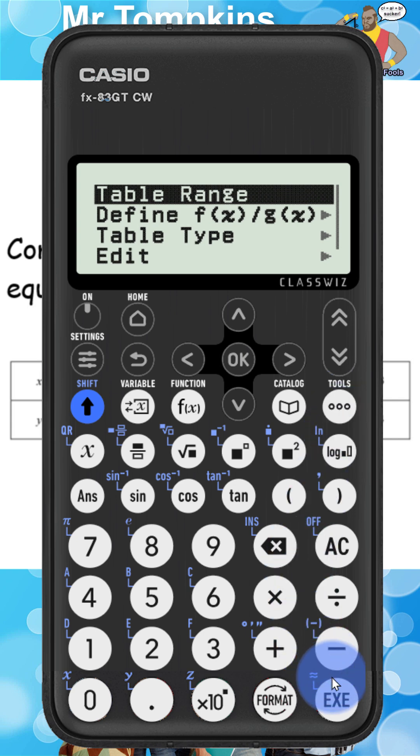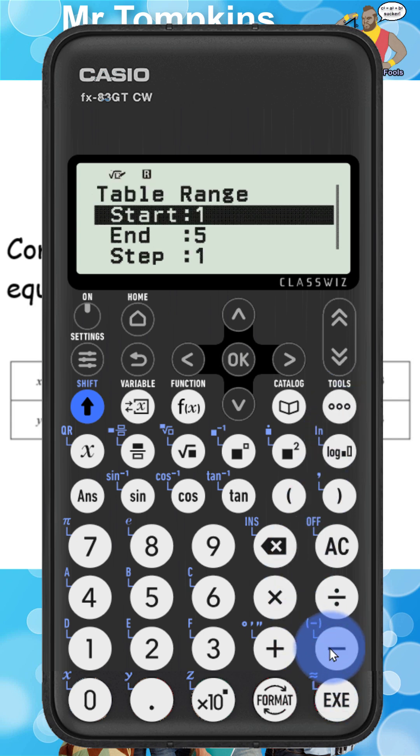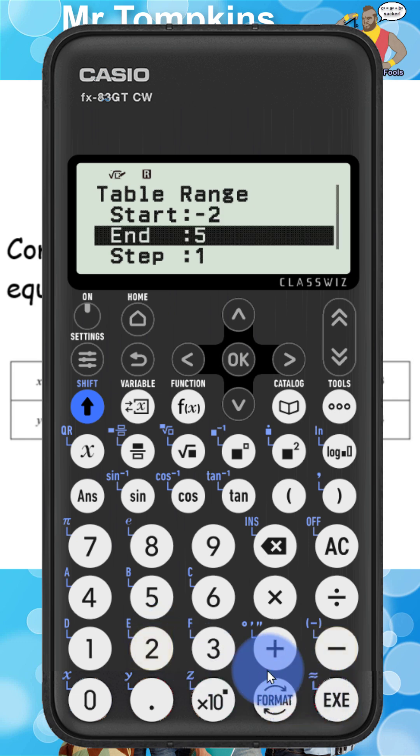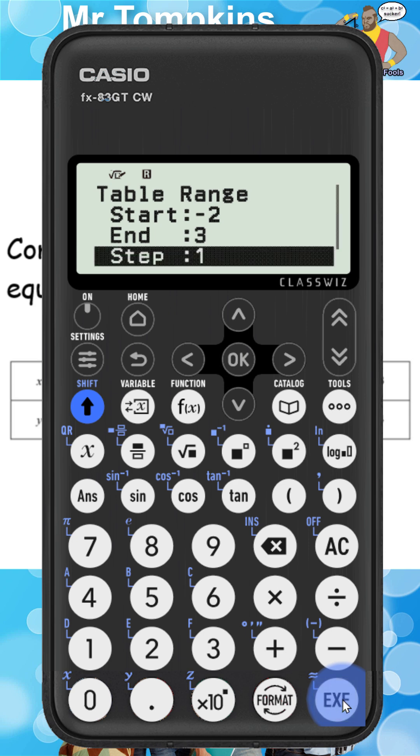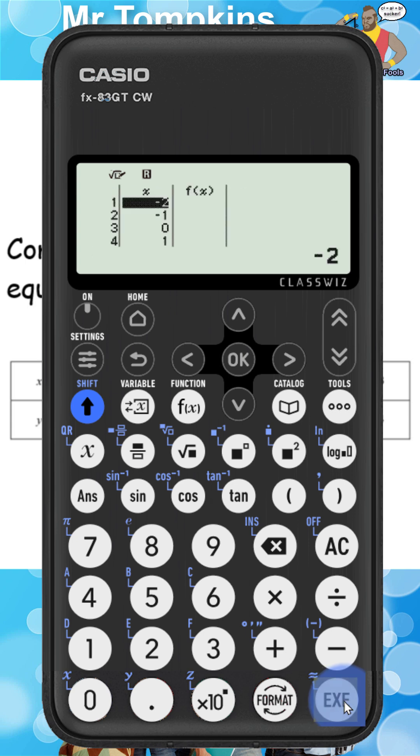I'm going to select that first so the start value again is minus 2. I'm going to press execute that takes me down one row and I'm going to type in three which is the last value on my table. Again I'm going up in steps of one so I'm going to press execute again and then I'm going to press the execute key.